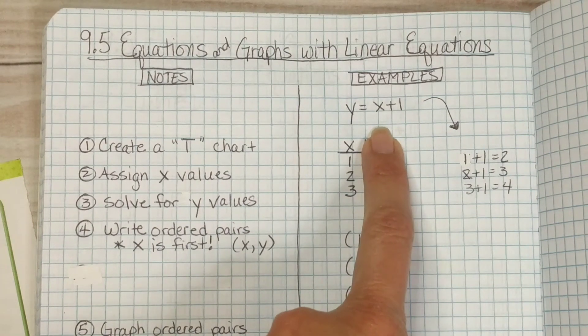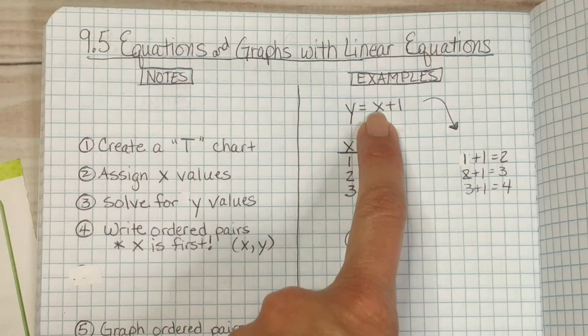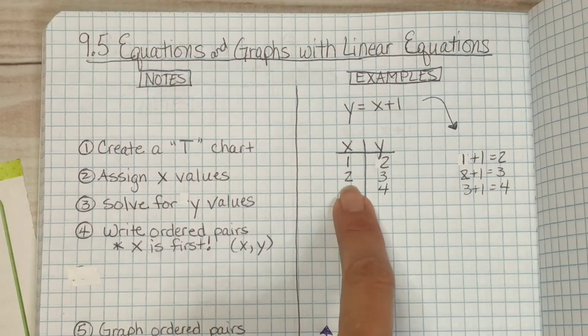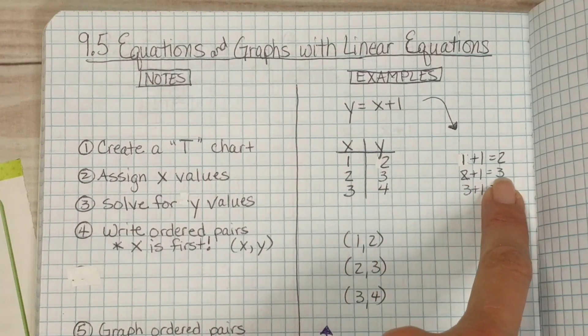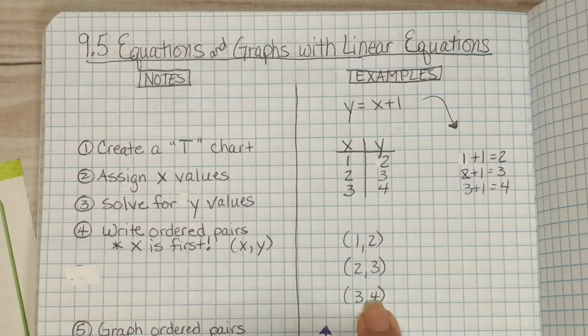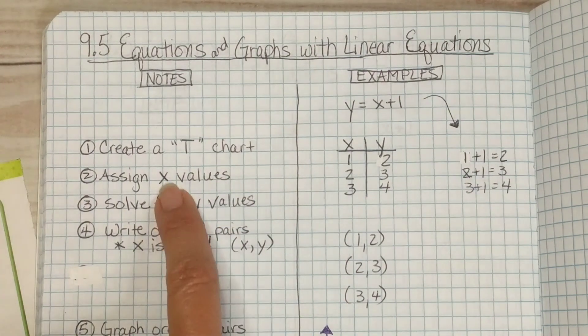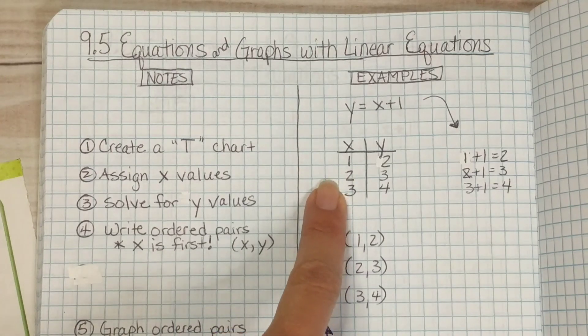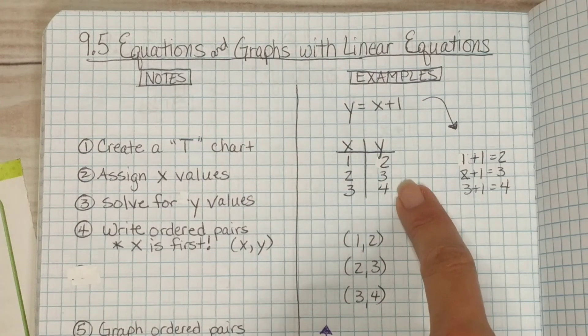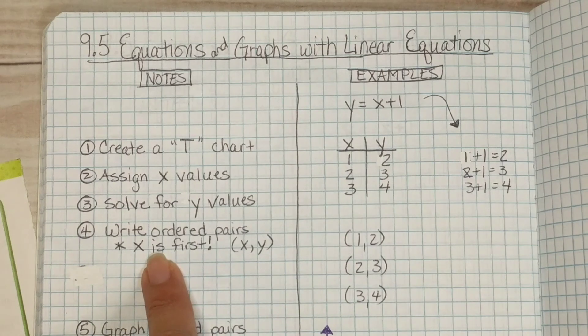Create a T chart and this T chart is where you're going to get your ordered pairs. So our first example was y equals x plus 1. That's our equation. So when x equals 1 y equals 2. Here's the work over here. When x equals 2 y equals 3 again the work over here. When x equals 3 y equals 4. And there's our ordered pairs based on the T chart that we created. We assigned the x values we use small values for our x then we solved for the y values that gave us these numbers these numbers over here.